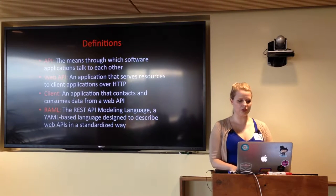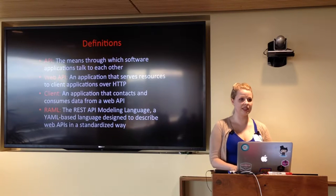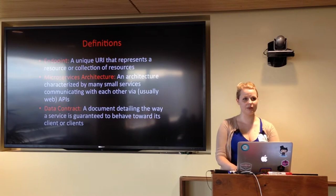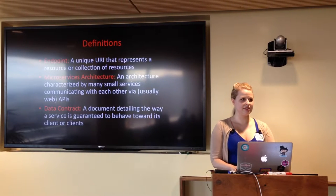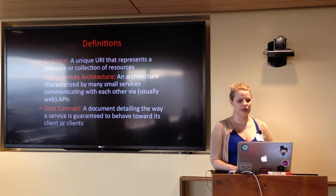I'm also going to be talking about RAML, which is the REST API Modeling Language. That's a YAML-based language used to describe how web APIs are intended to interact with their clients and what the clients can expect from the API. An endpoint, when I say endpoint, I'm referring to a unique URI that represents a resource or collection of resources — in plain English, a URL. Maybe your app has users, so you'll have an endpoint at slash users that somebody can go to to request a list of all users. Any unique URL can generally be regarded as an endpoint.